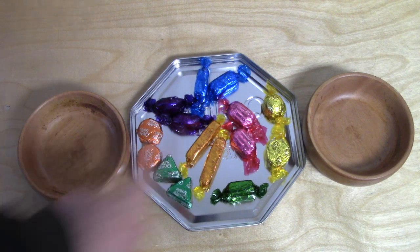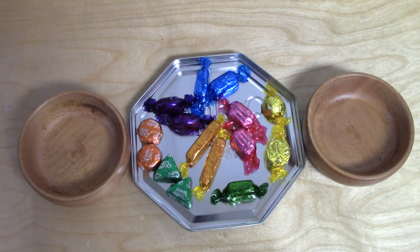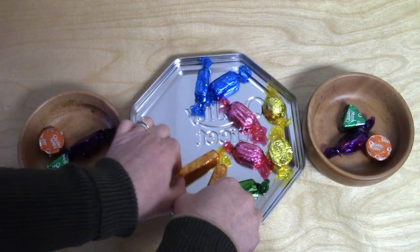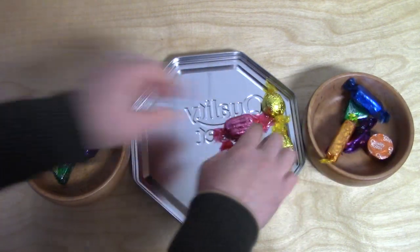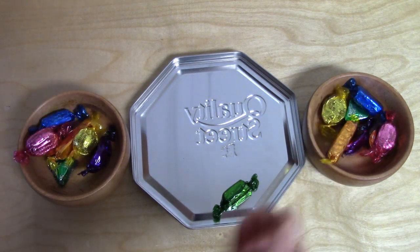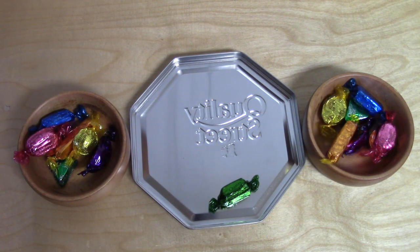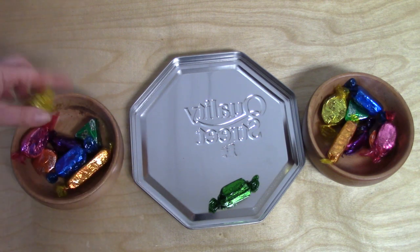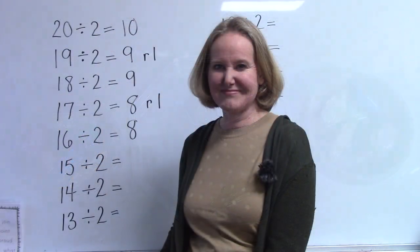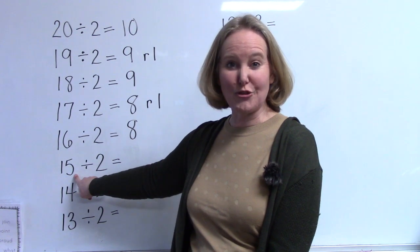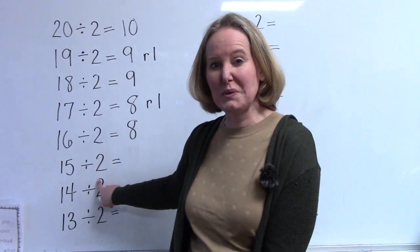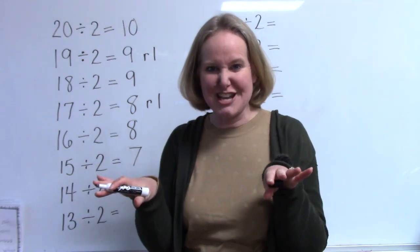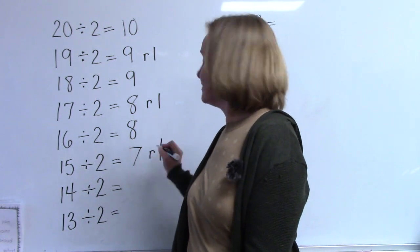Now I have fifteen candies and I'm going to divide the fifteen candies into two bowls. It's like we're dividing them between two friends — we want to make sure that we have given our friend an equal or fair amount. Oh, there's one left over. When we take the number fifteen and divide it by two, we have one, two, three, four, five, six, seven with one remaining. We just divided a group of fifteen candies into two bowls. It didn't go in evenly — there were seven in each bowl with a remainder of one.